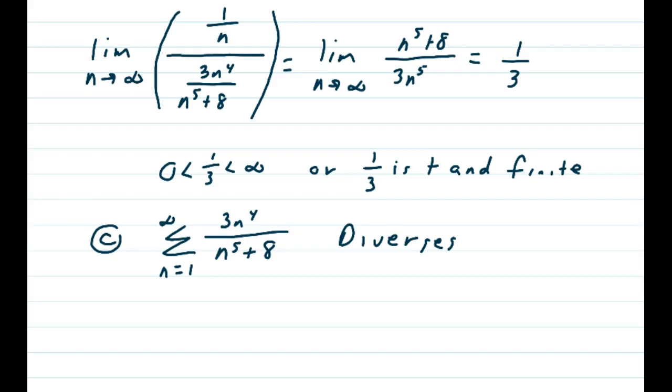And we end up getting that our new series, 3n to the 4th over n to the 5th plus 8, diverges.